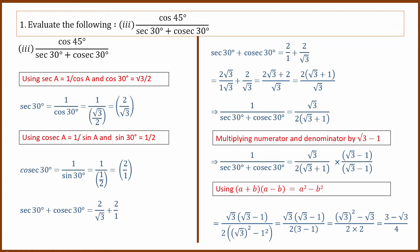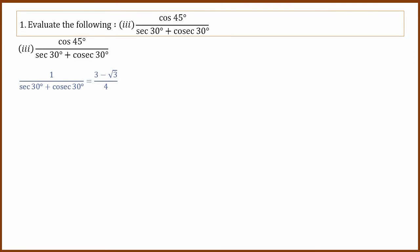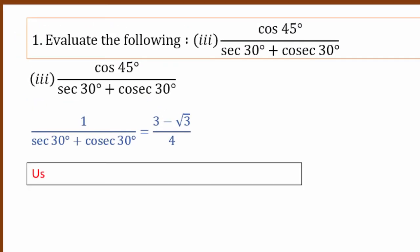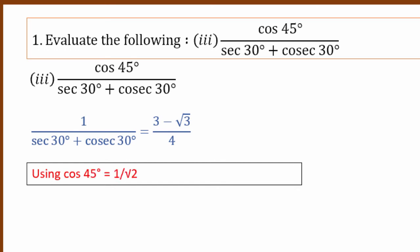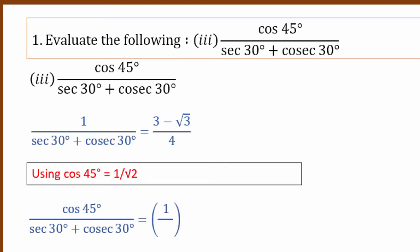This is cos 45. Cos 45 is 1 divided by root 2. The full expression result has cos 45 equal to 1 divided by root 2 in the numerator, and the denominator is the simplified result.